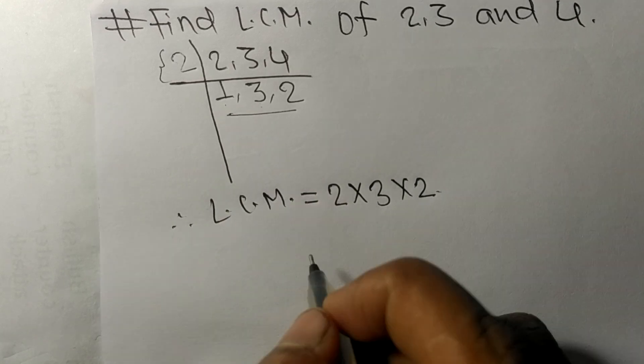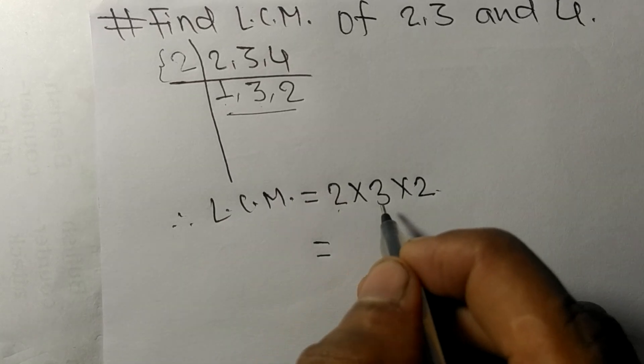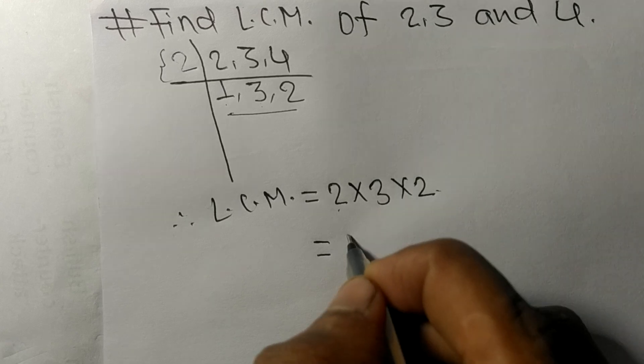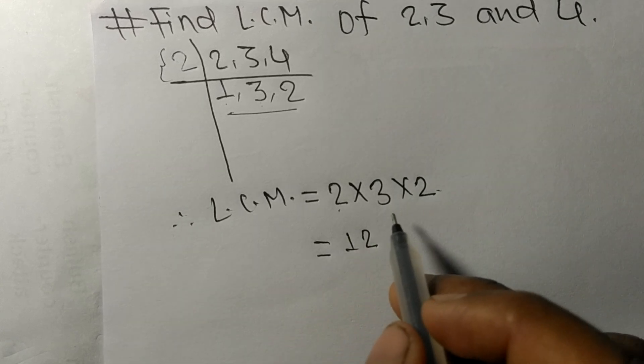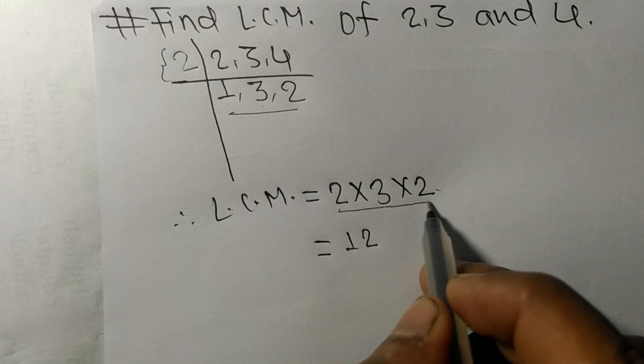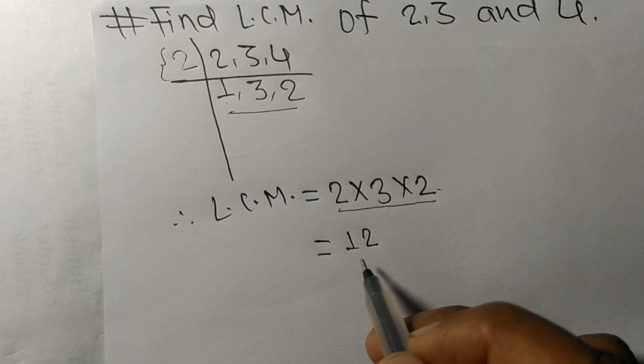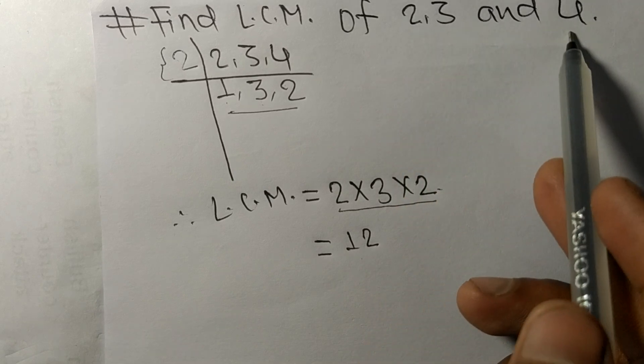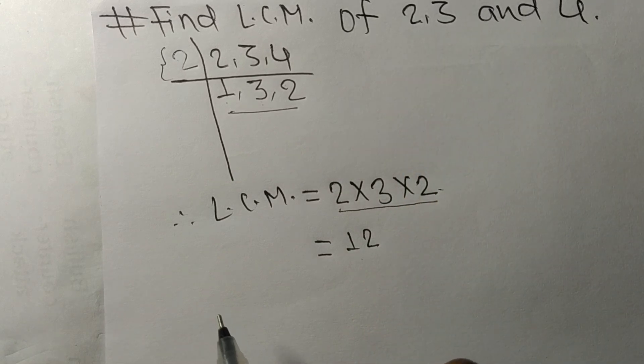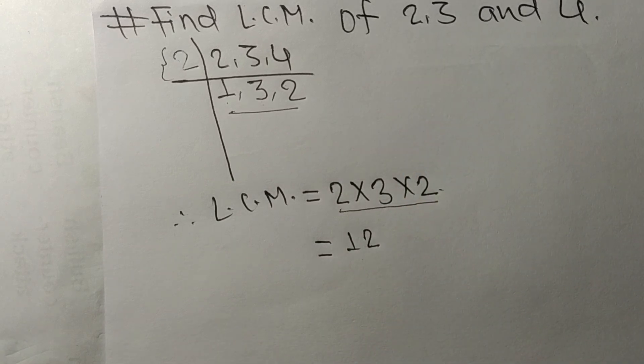So 2 times 3 means 6, 6 times 2 means 12. By multiplying all these numbers we got 12. So 12 is the LCM of 2, 3, and 4. That's all for today, thanks for watching.